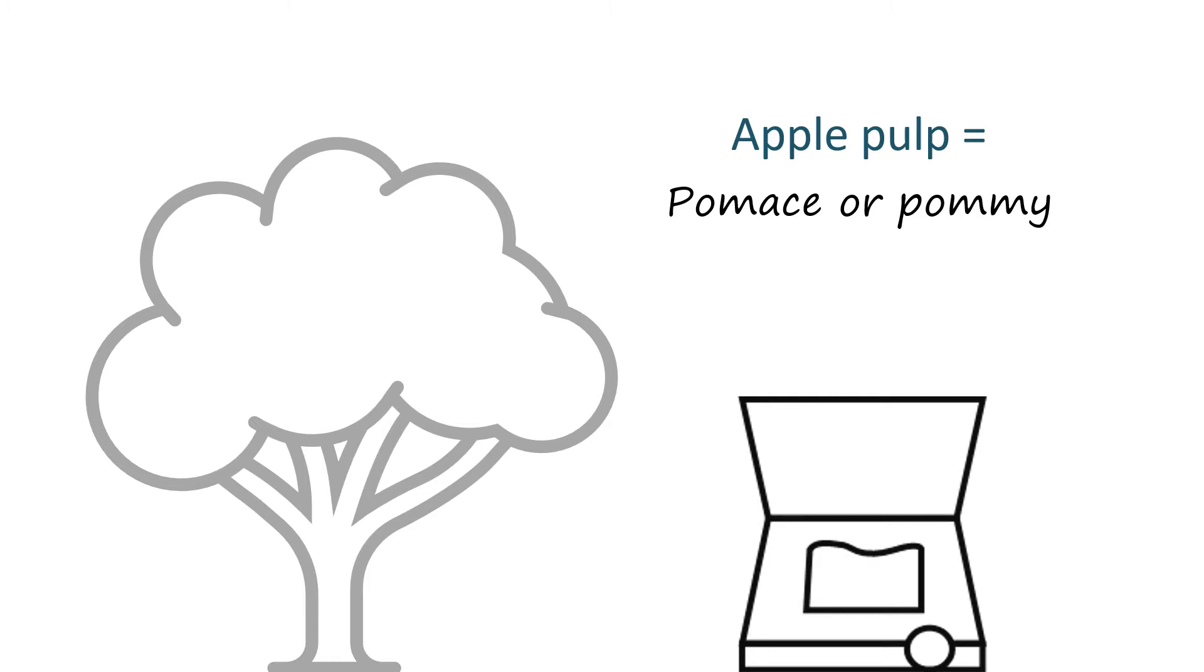In the more modern cider processing plants, the apples are reduced to a pulp in a grater type mill made of stainless steel. The apple pulp is known as the pomace, or pommie for short.